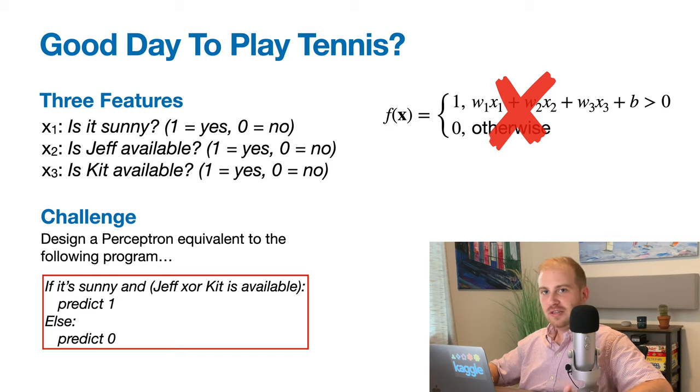Inspired by our understanding of the brain, and how the output of one neuron becomes the input to another neuron, what if we try connecting multiple perceptrons together? Does that give us some sort of advantage, and perhaps the ability to solve the XOR problem? Spoiler alert, it does. So see if you can handcraft a network of perceptrons to solve our previously unsolvable tennis program.